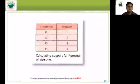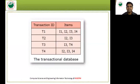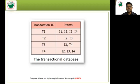The transactional database has two attributes: transaction ID and items. There are four transactions — T1, T2, T3, and T4. Transaction T1 contains items I1, I2, I3, I4. Transaction T2 contains I2 and I3. Transaction T3 contains I3 and I4. Transaction T4 contains I2, I3, and I4.